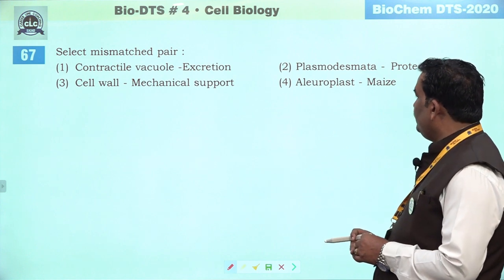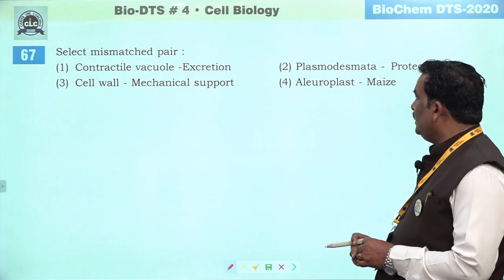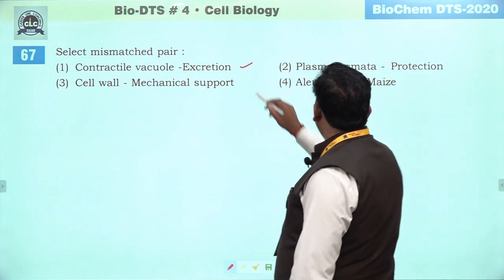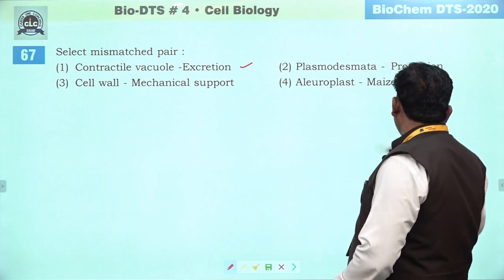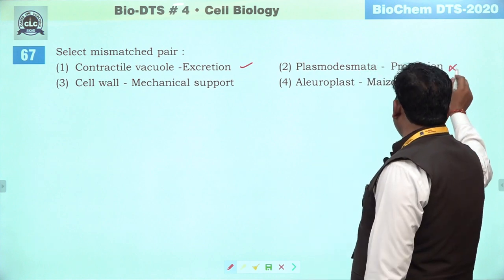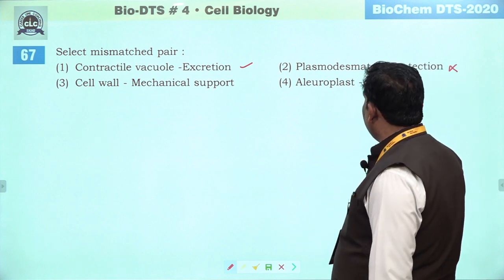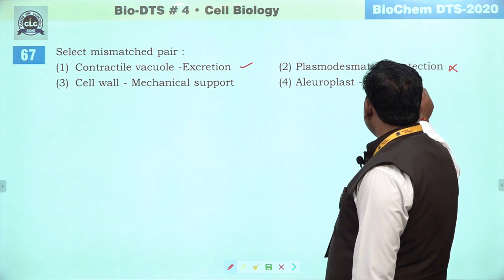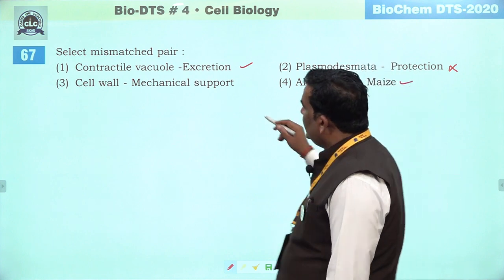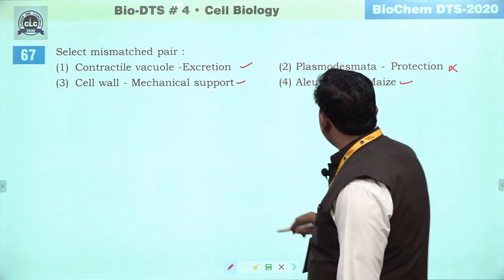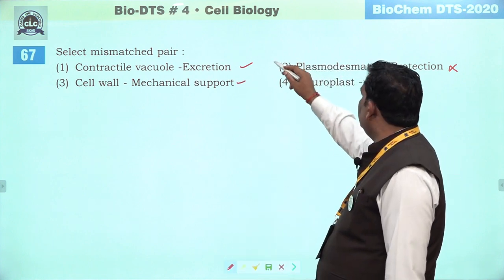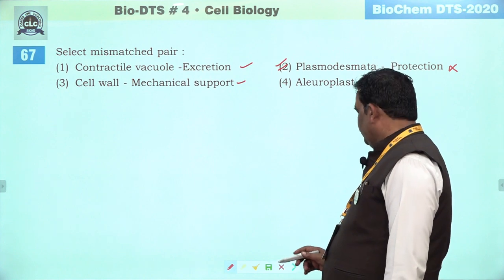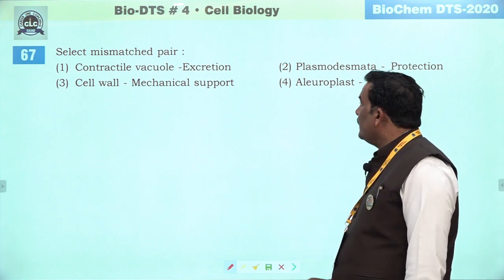Next question: select mismatched pair. Contractile vacuole — excretion — bilkul sahi hai. Plasma duct mein dag protection se koi connection nahi hai — mismatched hai. Toh hume answer mil chuka hai. Aleuroplast maize mein paaya jaata hai. Cell wall mechanical support karta hai. Second is the right answer because it is mismatched.